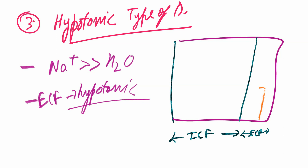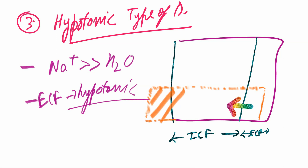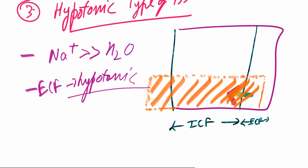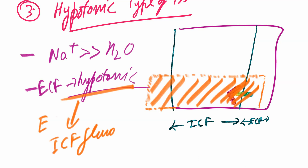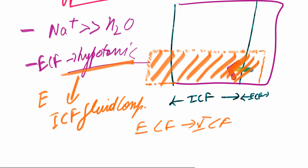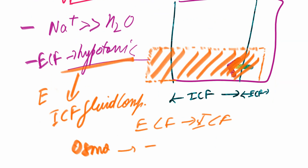As the extracellular fluid compartment becomes hypotonic, there is subsequently movement of water from the extracellular fluid to the intracellular fluid compartment, and the intracellular fluid compartment volume increases. The osmolarity of both the extracellular fluid and intracellular fluid compartments decreases because there is more sodium loss, and secondly, water moves from the extracellular fluid to the intracellular fluid, so ICF osmolarity also decreases.